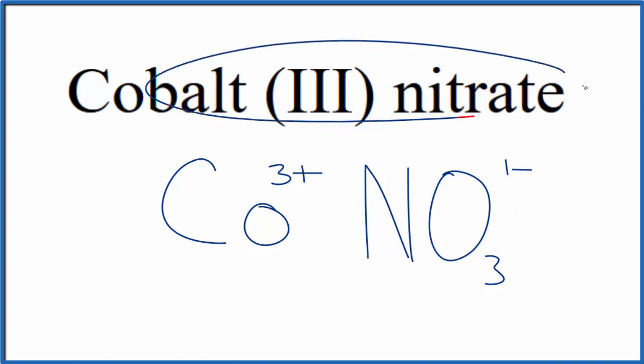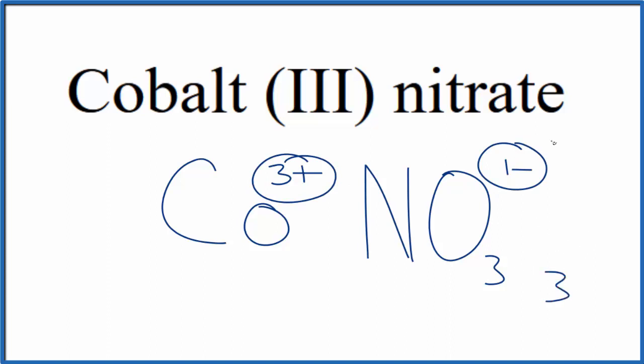So since cobalt 3 nitrate is a neutral compound, it doesn't say ion after it, these charges here need to add up to zero. We need a net charge of zero. So if we had 3 of these nitrate ions here, 3 times 1 minus, that would give us 3 minus, that would balance out the 3 plus.